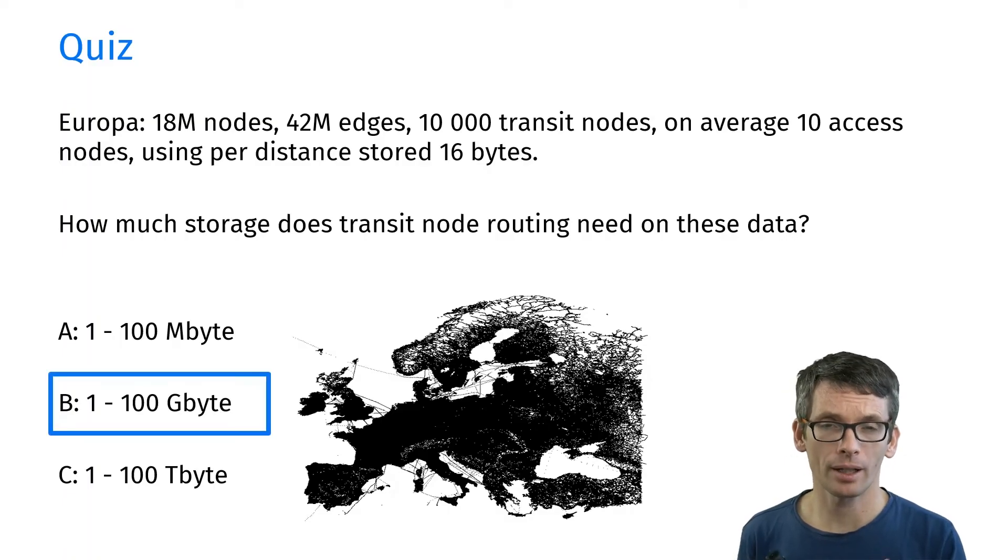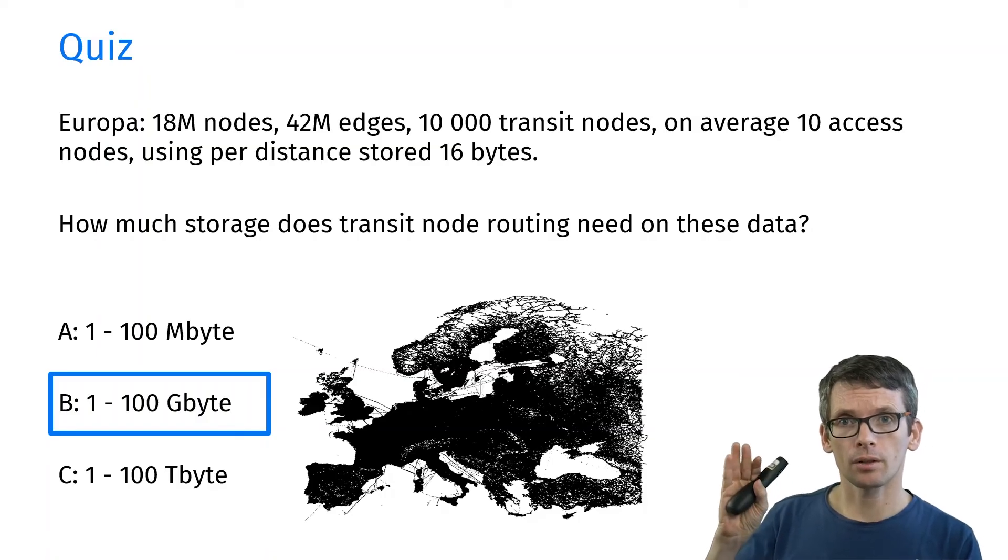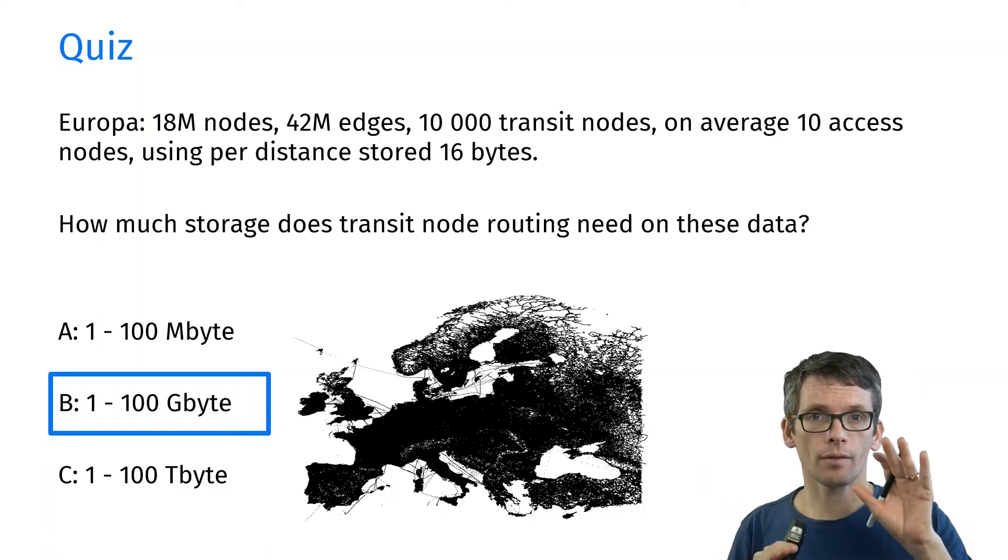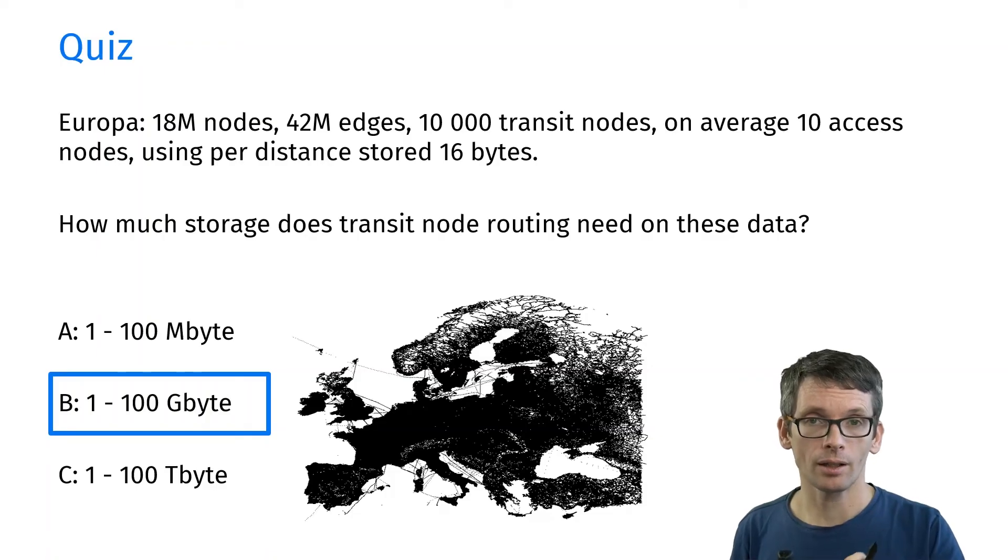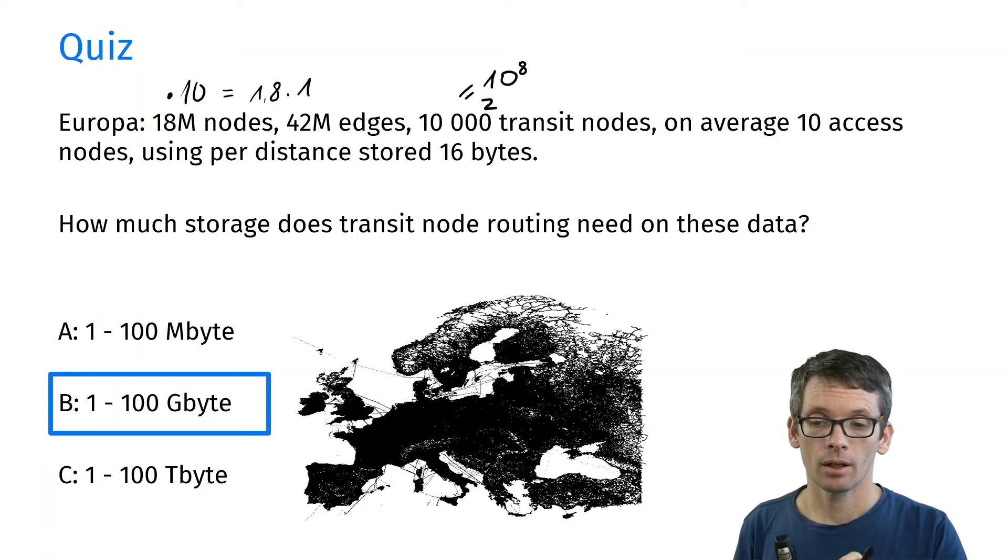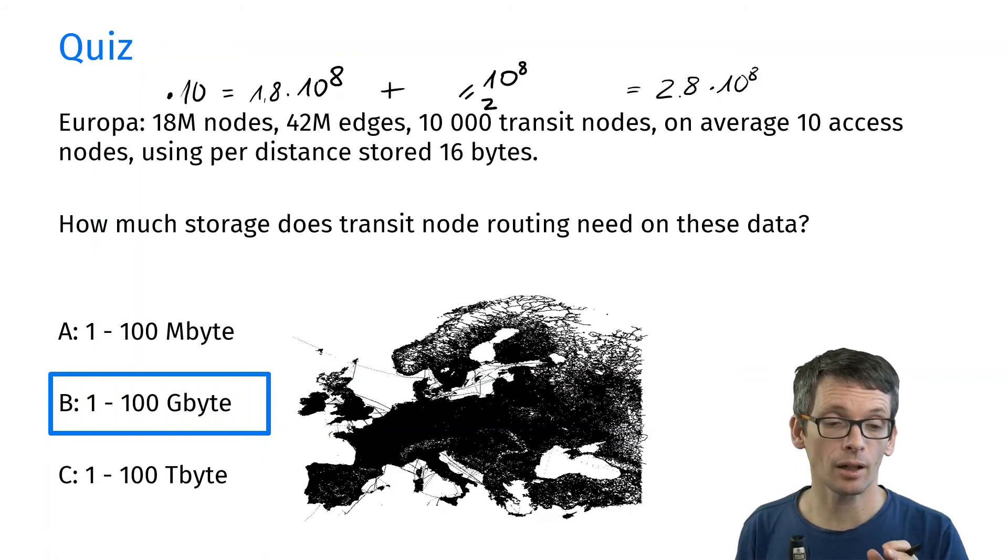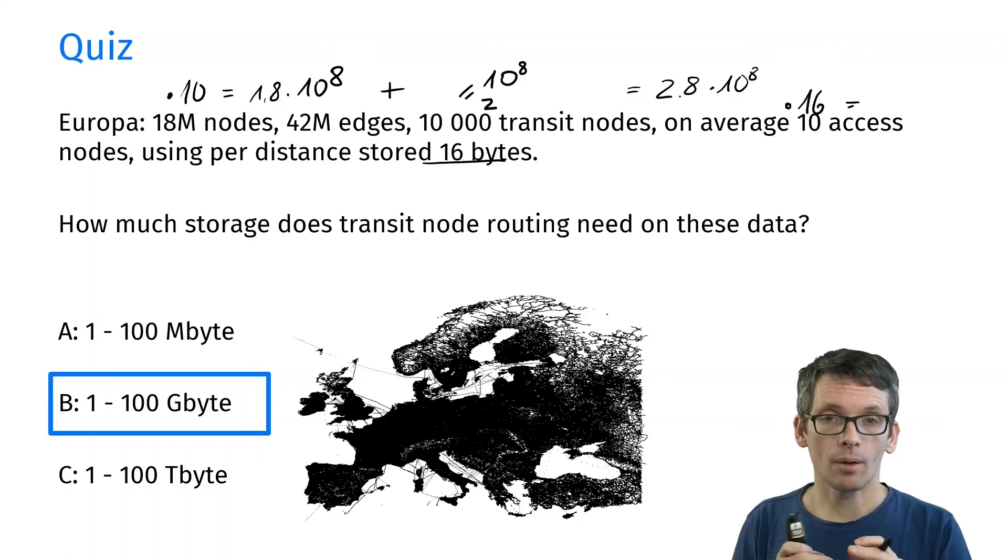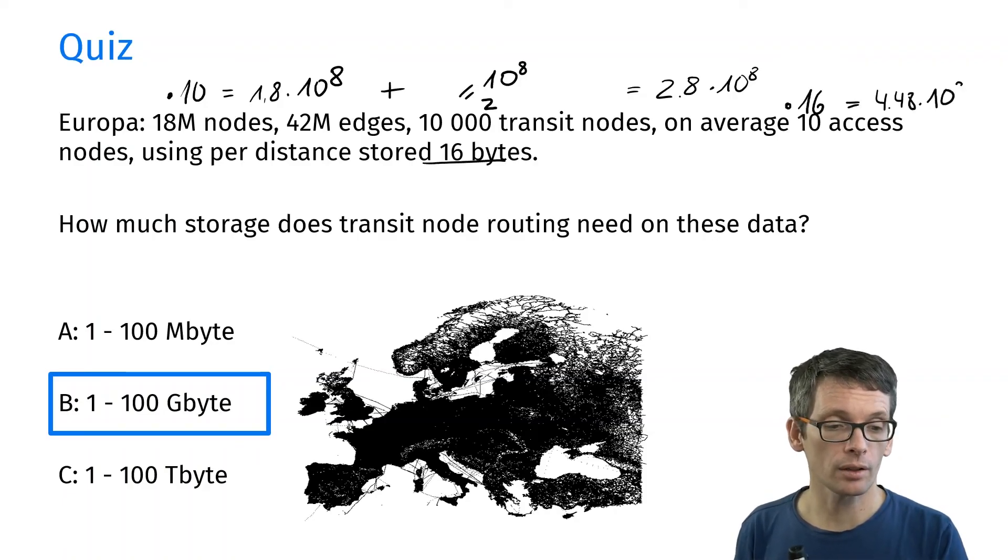It's in the range of gigabytes. Let's do the calculation. The distances that I'm storing is 10 for each node, and then between any pair of transit nodes. So I have 10⁴ transit nodes, so 10⁸ distances there. Then 18 million nodes, that times 10 is 1.8 × 10⁸. Let's add that up. That's something in the range of 10⁸, 2.8 × 10⁸. Now I'm using 16 bytes for each of these. So let's multiply this with 16. This gives me something in the range of four and a half gigabytes.